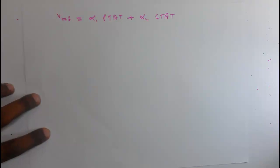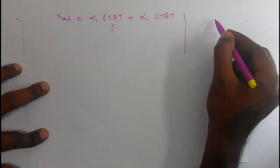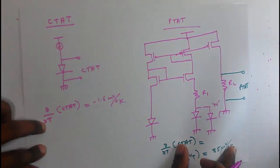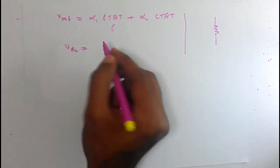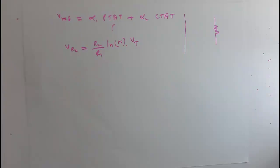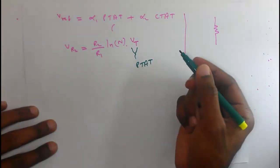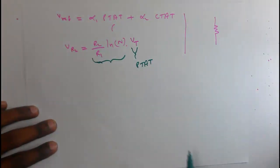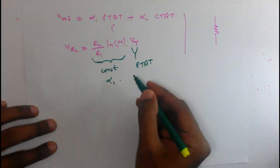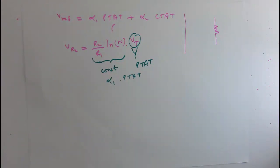We discussed the PTAT and CTAT separately. The PTAT voltage is the voltage across R2, expressed as VR2 = (R2/R1)·ln(N)·VT, where N is the number of diodes in parallel and VT is the thermal voltage. VT is the core PTAT, and R2/R1 is a ratio while ln(N) is a constant, so this part is a constant. We can write this as alpha 1 times PTAT, considering VT as our PTAT.